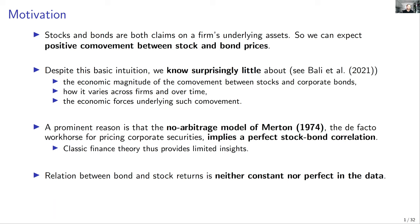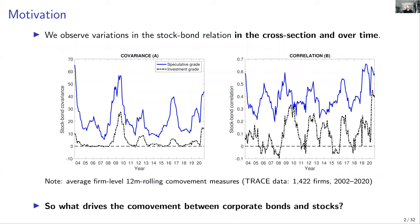Perhaps one reason we don't know that much about the factors driving dependence between stock and corporate bond returns is because when we come back to Merton's seminal paper — the de facto model guiding empirical analysis and subsequent theory — one prediction or limitation of that model is that stocks and bonds within the framework will be perfectly correlated. But when we step back and look at the data, the co-movement between stock and corporate bonds is far from constant or perfect.